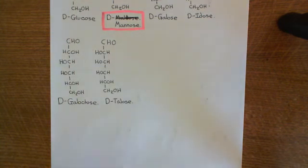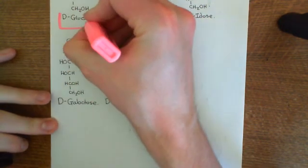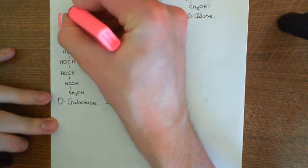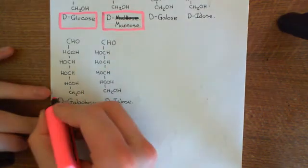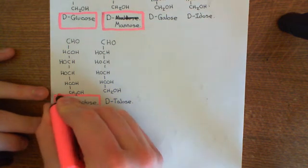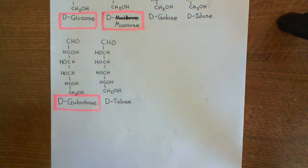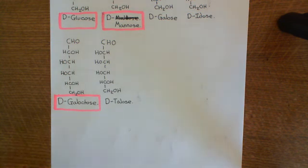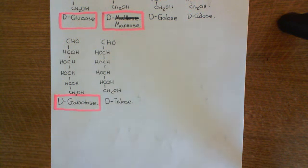So we've discussed that the three aldohexoses that are actually going to be present within cells are D-glucose, D-mannose, and D-galactose. Now, these might not be the way you are used to seeing D-glucose, D-mannose, and D-galactose shown. So we'll now, in the next video, discuss the cyclisation of these monosaccharides.